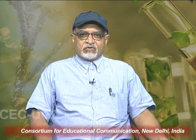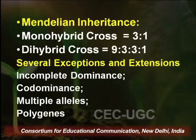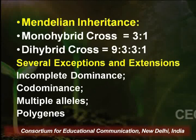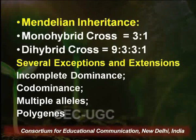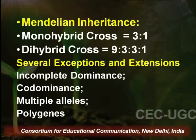But Bateson and Punnett went beyond and found that there were certain exceptions too, and they tried to analyze, rationalize, and gave justifications of what these extensions could be. Just to give you a little recap, you can see on your screens the summary of Mendelian inheritance: a monohybrid cross having a phenotypic ratio of 3:1 and likewise a dihybrid cross having a ratio of 9:3:3:1.